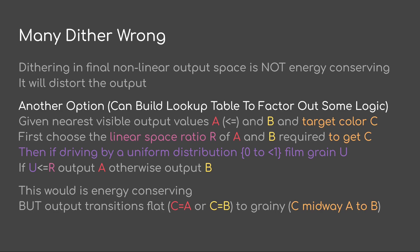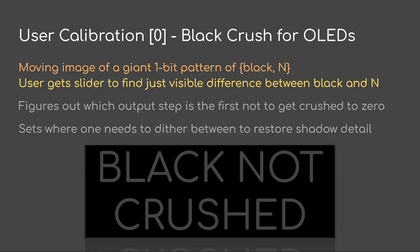If you're driving by a film grain that is a uniform distribution from 0 to 1 — call that film grain U — then if U is less than or equal to R (the linear space ratio), we output A; otherwise we output B. Note this is energy conserving, but output transitions are going to be flat where C equals A or C equals B, and they will transition into grainy C midway between A and B. For user calibration, we need to calibrate against the black crush that typical OLED panels have due to pixel volatility close to black. One way to do this is to have a moving image of a giant 1-bit pattern of black and the next level N on a slider, and the user finds the just visible difference between black and the next tone — effectively finding which output step is the first to not get crushed to zero.